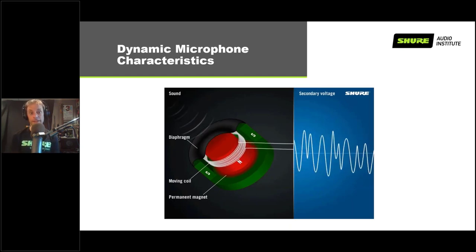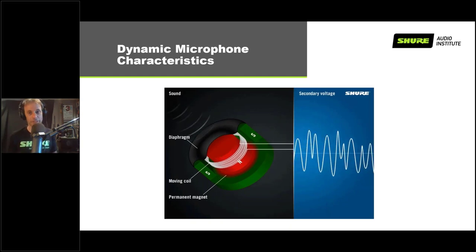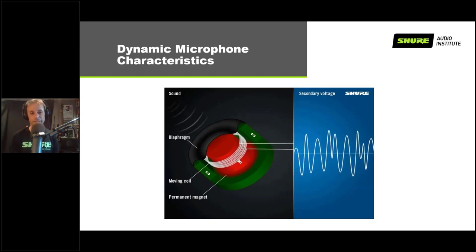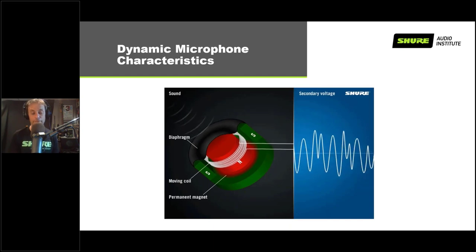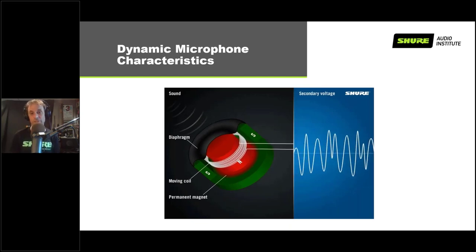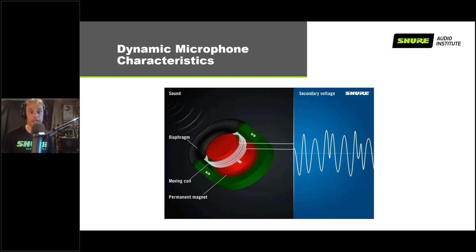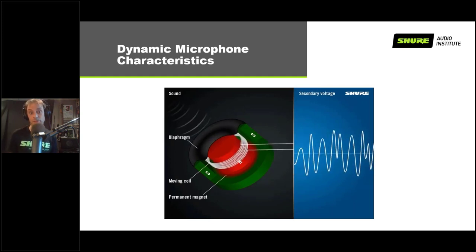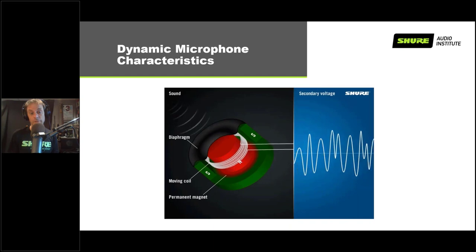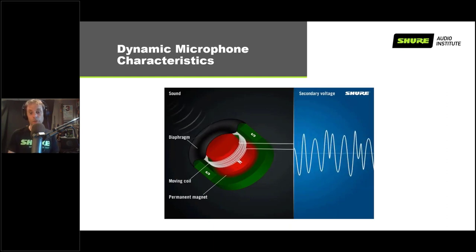Some downsides to a dynamic mic: they can't be effectively miniaturized — they have to be of a certain size to have decent sound quality. You never see dynamic lavalier microphones because you can't make them small enough to wear on your body and still sound good. There's also a limitation to the frequency response — some dynamic mics sound really good, but they typically can't sound quite as good as some condenser models.